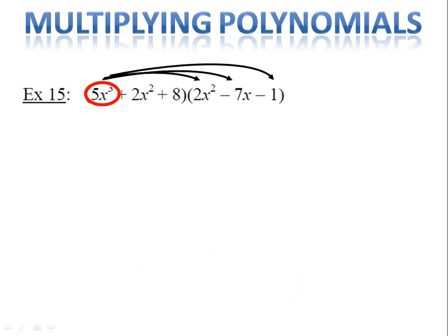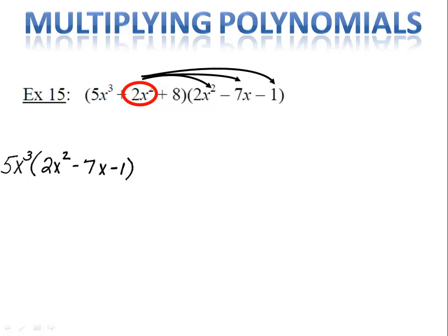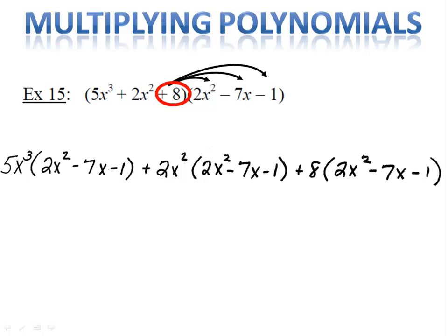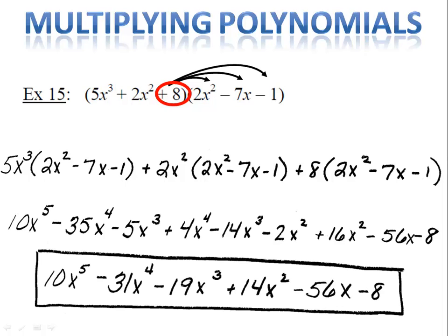One last example to look at today. We're going to multiply two trinomials together, and again the trick is using the distributive property. We begin by distributing the 5x to the third into 2x squared minus 7x minus 1. Then we'll distribute the 2x squared, and finally we'll distribute the 8. All we have to do is use the distributive property, combine like terms, and we have our answer. These are probably the trickiest ones, but just go slowly, remember your rules for multiplying exponents, and you'll get from the beginning to the end easily.